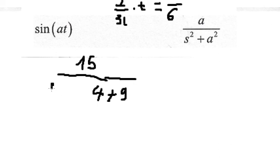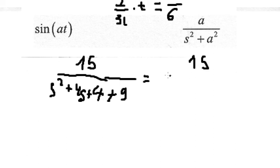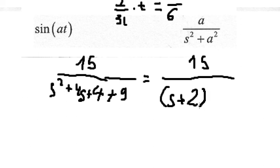We have s plus four s plus four — this is a perfect square identity — so we change it into (s plus two) squared plus nine. We see that this is about s plus two, not about s alone.